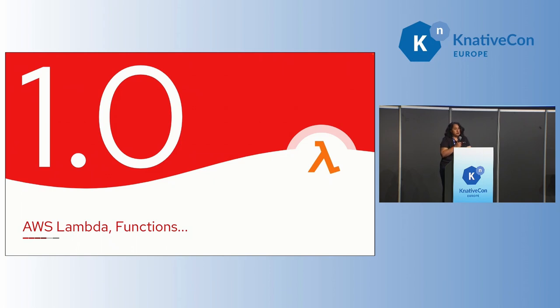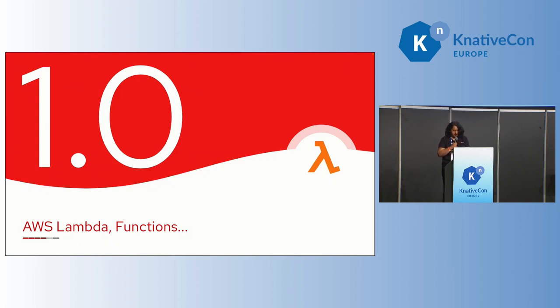Though AWS Lambda was pivotal in making serverless popular and enabled a variety of use cases, it had its own limitations around the choices of language, the execution time, and local developer experience.